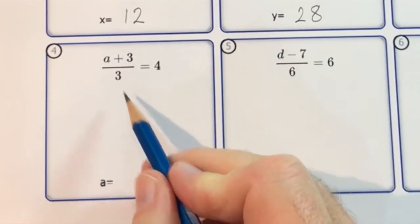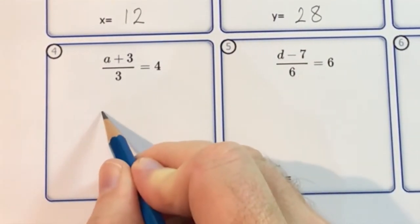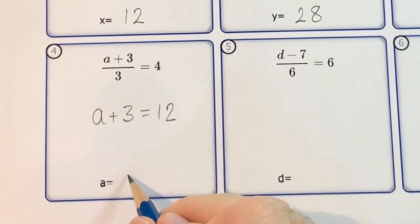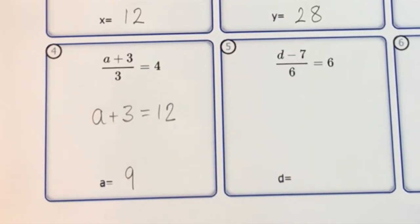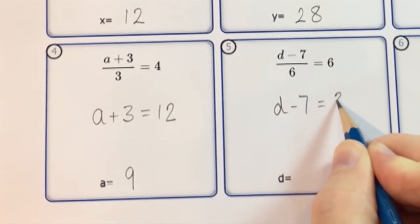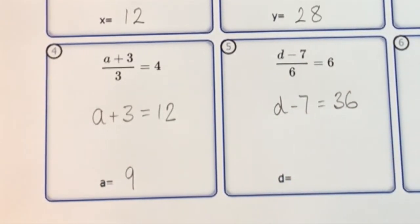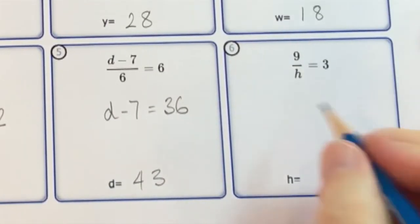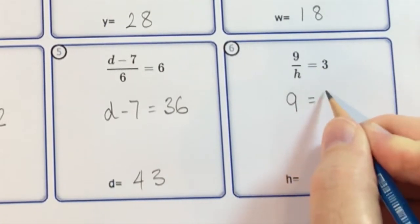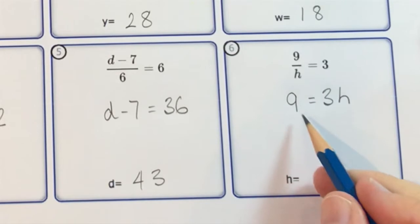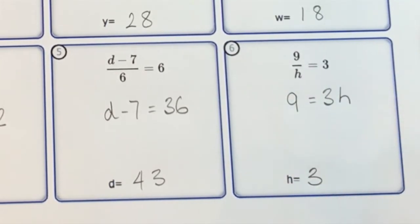Example 4: multiply both sides by 3, then subtract 3 from both sides. Example 5: multiply both sides by 6, then add 7 to both sides. Example 6: multiply both sides by H, then divide both sides by 3, so H will be equal to 3.